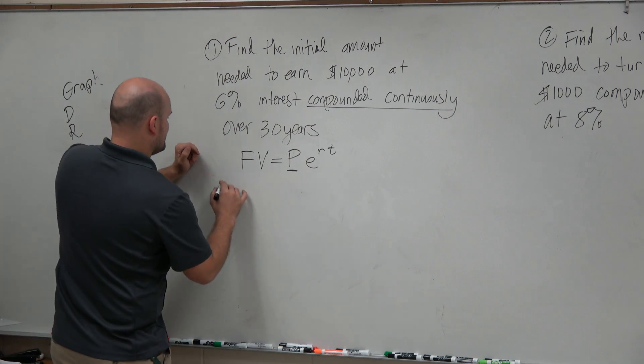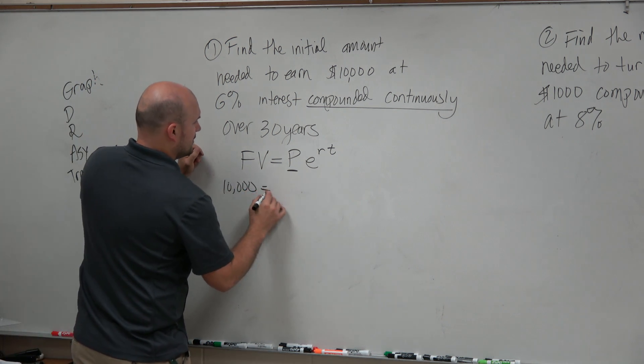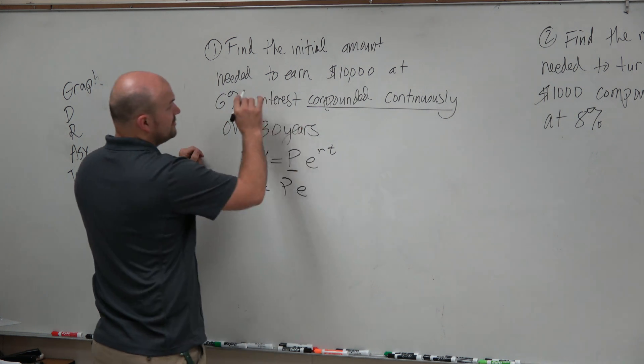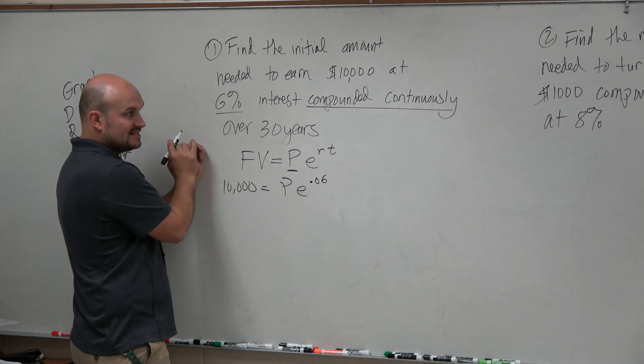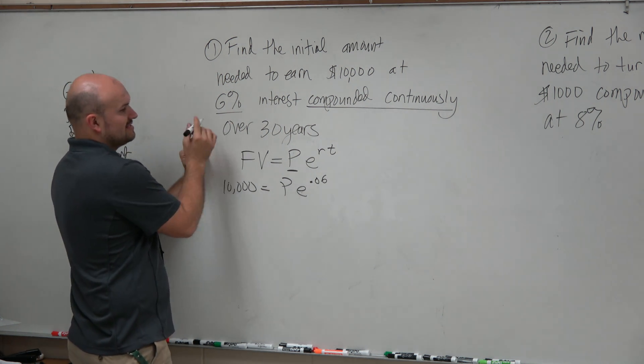So our future value is going to be $10,000. $10,000 equals P times E to the R, which is 0.06. Make sure your interest rate is in decimal form, and that's going to be over 30 years.